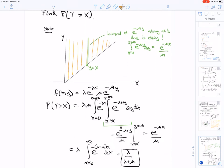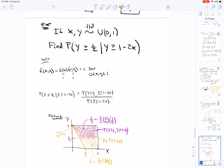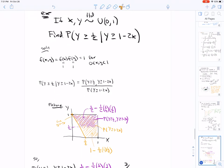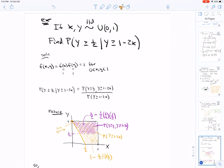Here's another example: If X and Y are IID standard uniforms, the probability that Y is greater than or equal to a half given that Y is greater than one minus 2x. Let's just note that because X and Y are standard uniform, the joint density is just one for x and y between zero and one.